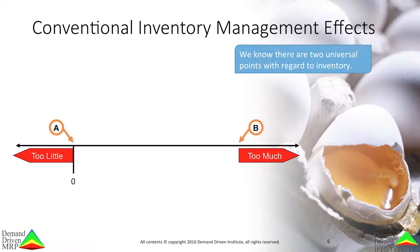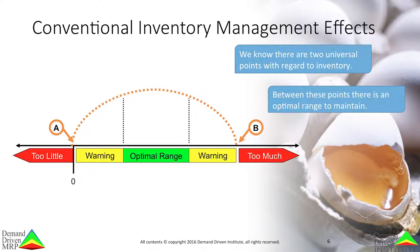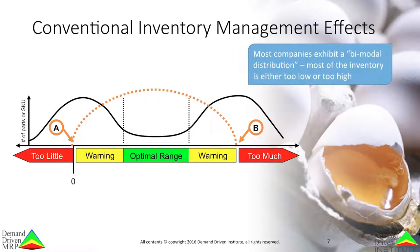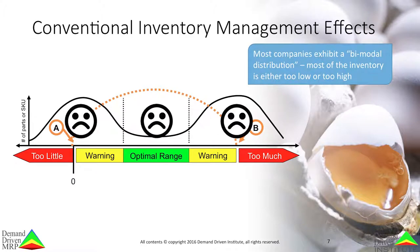Point B is too much — there is excess cash, capability, materials, and space committed at this point. At both of these points, flow breaks down. If we know these two points exist, then we also know that somewhere between the points there must be an optimal range, a level that is needed to protect flow without being excess. Yet most companies exhibit what is known as bimodal distribution. Most of the inventory is either in the too-low or too-high range. Very little is within the optimal range.